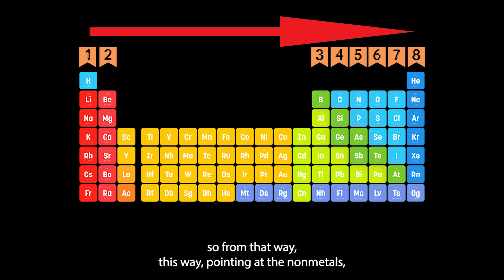As we go from left to right, pointing at the non-metals, the metallic character of elements decreases. When we go from the left hand side with the exception of hydrogen, we notice that as we go this way, elements start to lose their metallic character.